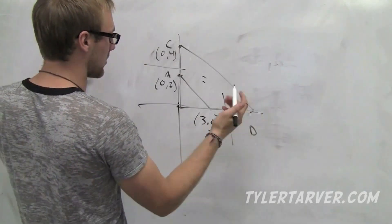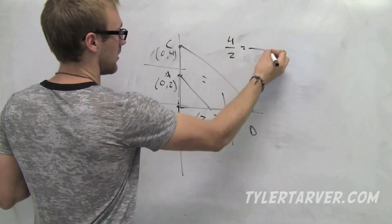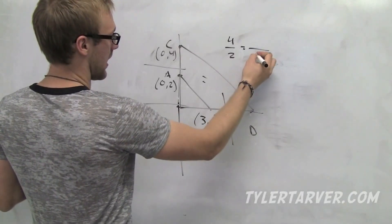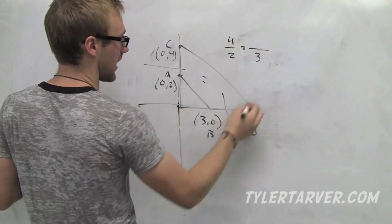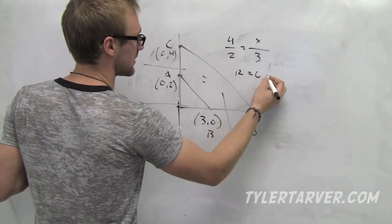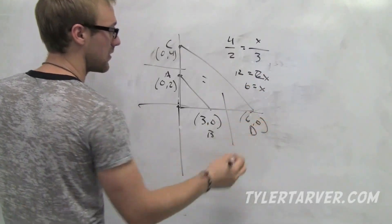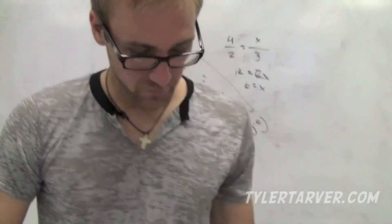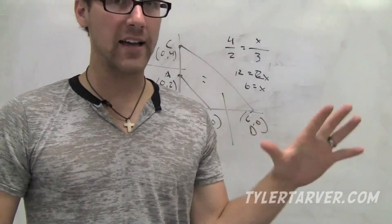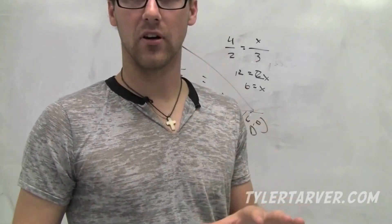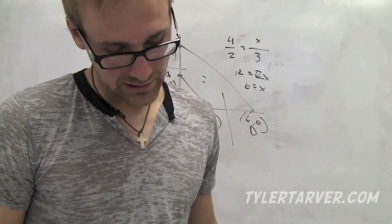We don't know D, so we call it X. That gives us 4 over 2 equals X over 3, which works out to 12 equals 2X, divided by 2, so X equals 6. That means D is at (6, 0). To prove triangles are similar, we still use AA, SAS, or SSS — angles are congruent and sides are proportional. We'd use the distance formula and compare the sides. That pretty much sums it up.